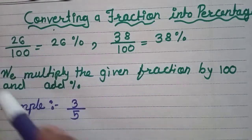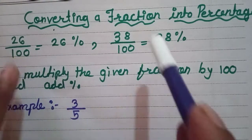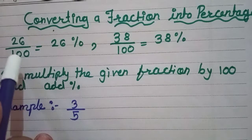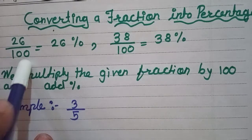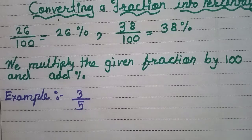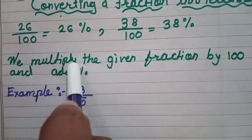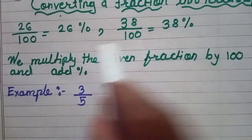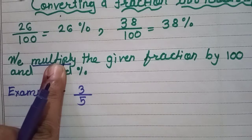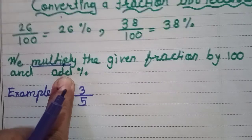When the denominator is other than 100, we multiply the given fraction by 100. Previously we had to divide, but here we have to multiply the given fraction by 100 and add the percentage sign.